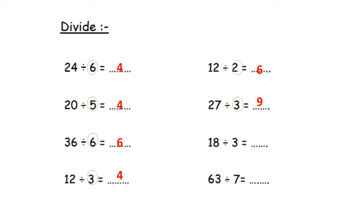18 divided by 3. Again, table 3. Circle the number after the sign — this is table 3. Close your fingers. Sing with me, please: 3, 6, 9, 12, 15, 18 — they are 6 fingers. So the answer will be 6.